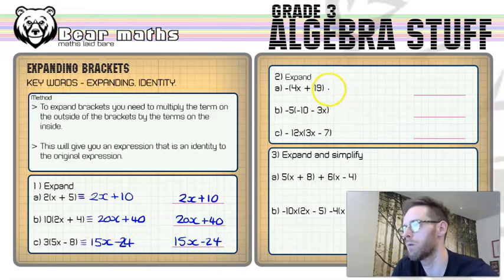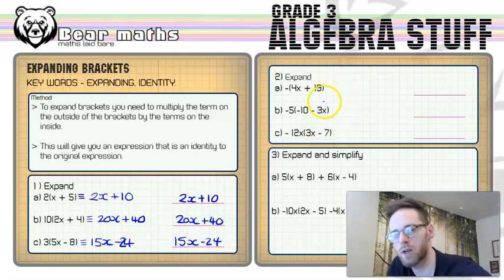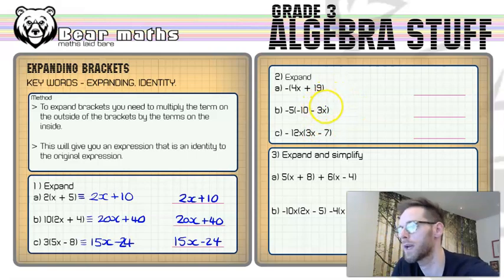Now moving on to question two. We've got some trickier ones because we've got the negatives on the outside. More negatives makes things more complicated mathematically, or just harder to do in your head. If you've got a calculator, it does the job for you. As long as you put your negative numbers in brackets.